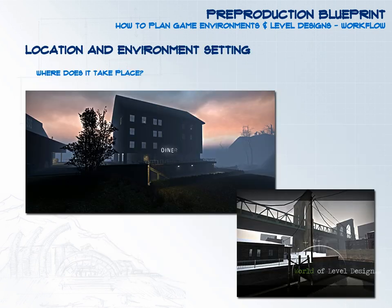The next step is to define location and environment setting. You have your idea, a purpose, and a set of features — now you need to define the actual place of your environment. Where does it take place? You want to be very specific. Is it an urban setting, a rural landscape, or an industrial setting? Narrow it down further: what state, what city? The more specific you are about your location and environment setting, the better decisions you'll be able to make throughout the rest of the planning and production stages.